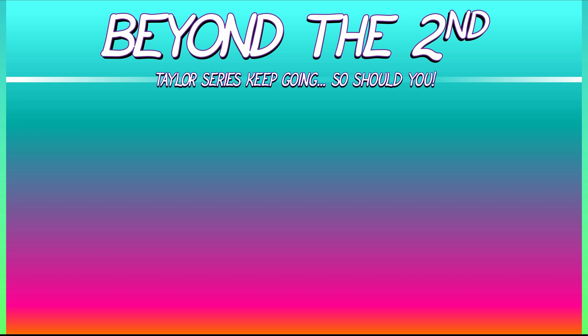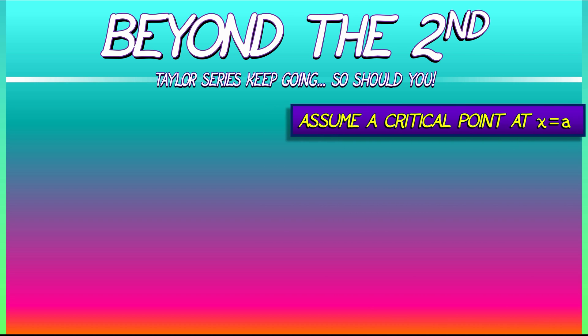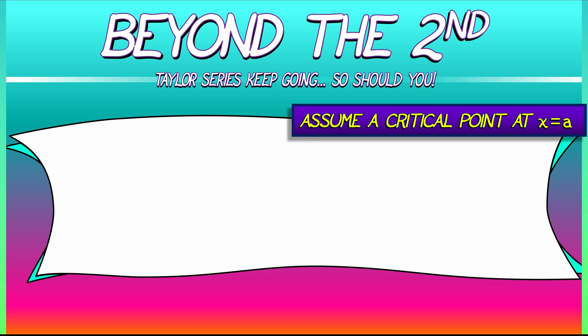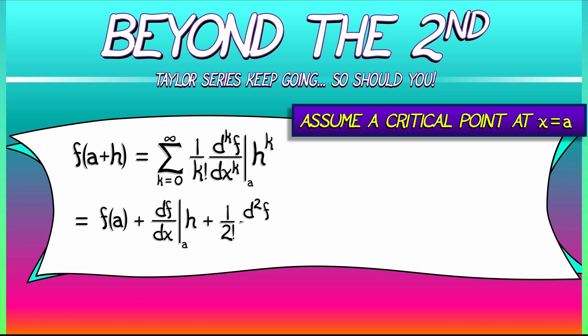Taylor series goes beyond the second derivative, and so can we. If we assume a function f with a critical point at x equals a, we consider the Taylor expansion about a. We look at f of a plus h. Write out the Taylor series for that. That's f of a plus the derivative times h plus 1 over 2, the second derivative times h squared, the third order term, the fourth order term.